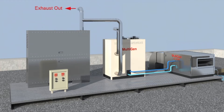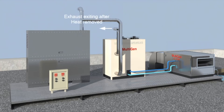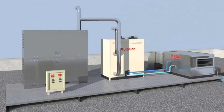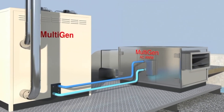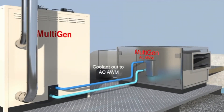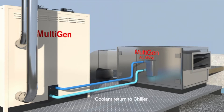After having made electricity, the waste exhaust leaves the turbine and is diverted into the absorption chiller, where heat is extracted to operate the absorption process. This process creates a cold 5°C coolant which is pumped to the air water maker and returned to the absorption chiller for recooling after the heat exchange process.